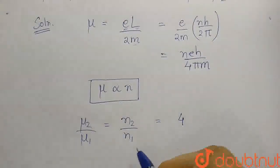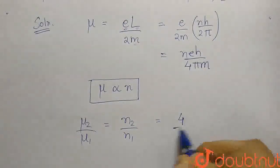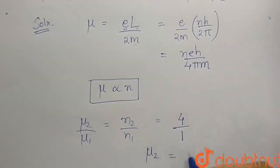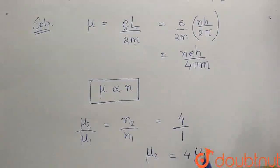And what is n1? n1 is the ground state, which is 1. So our mu2 becomes mu2 is equal to 4 mu1.